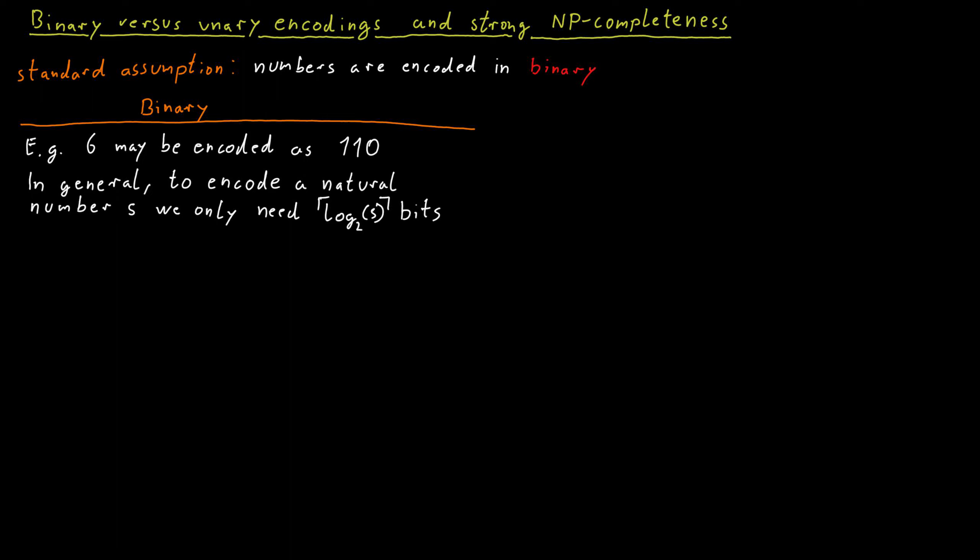But now assume for a moment that you don't know anything about computer science. And you are asked to encode a natural number in a bit string. Maybe you would come up with a quite different system. And I think a fairly natural first attempt would be to use something called unary encoding.